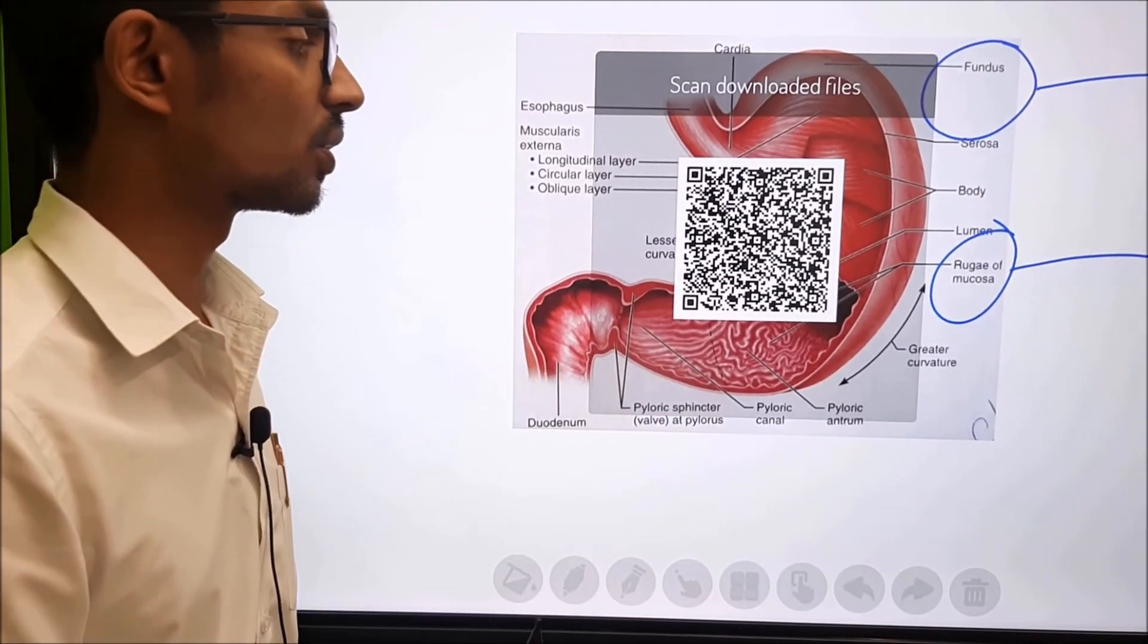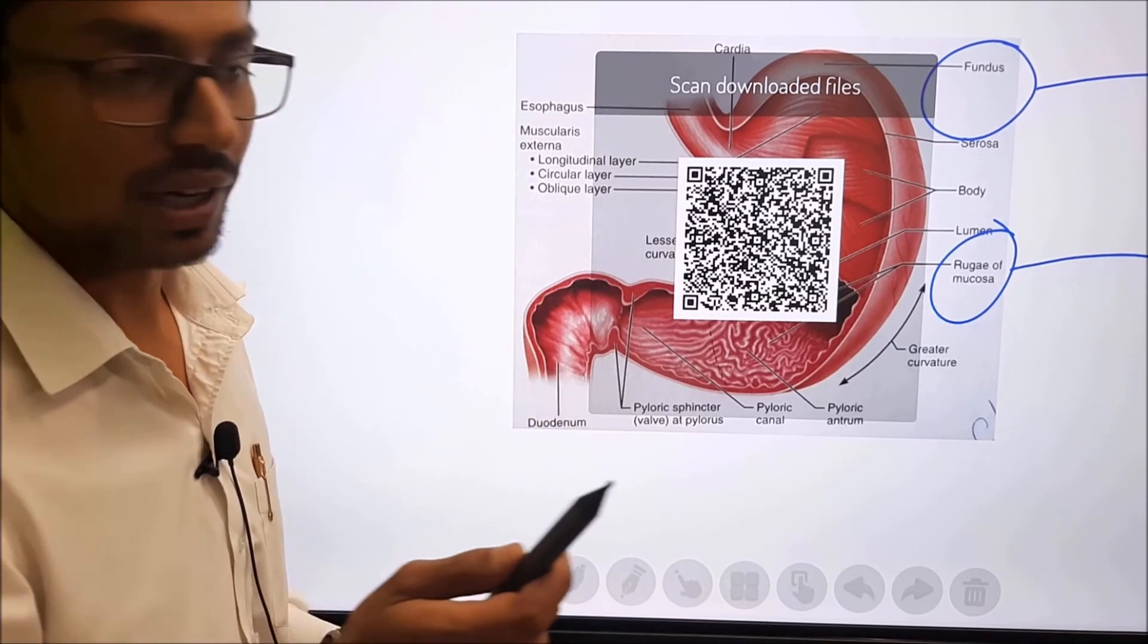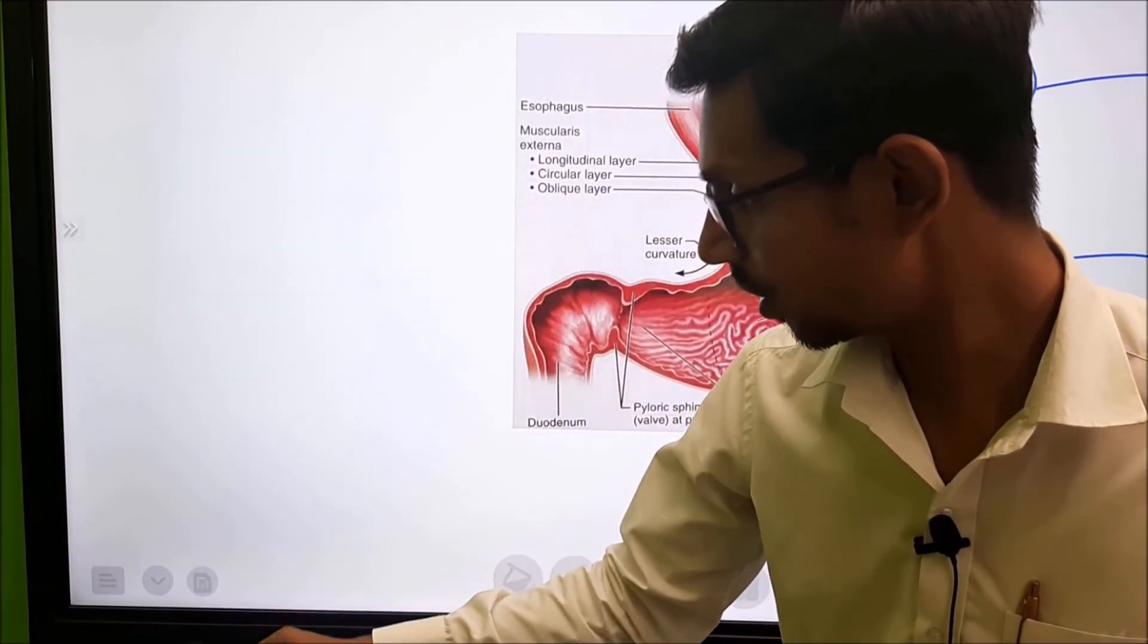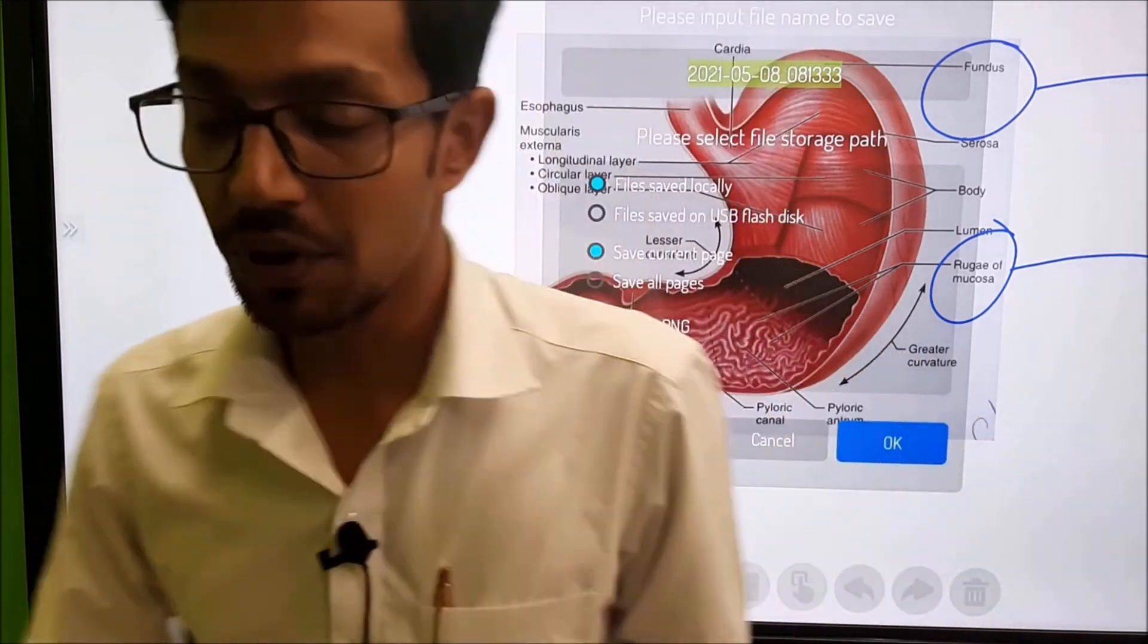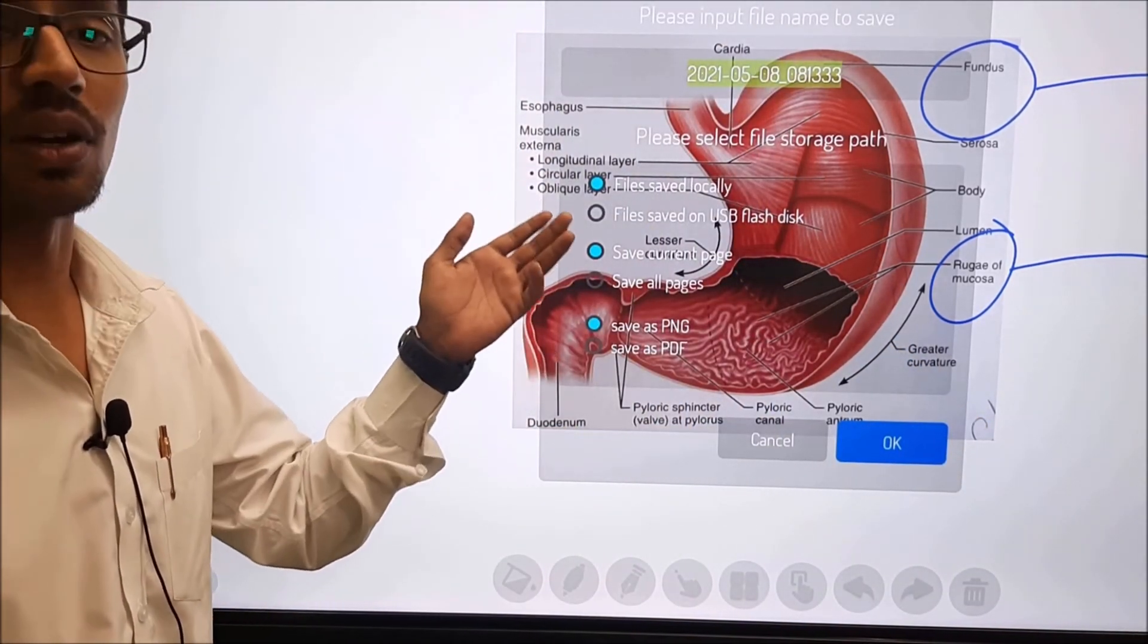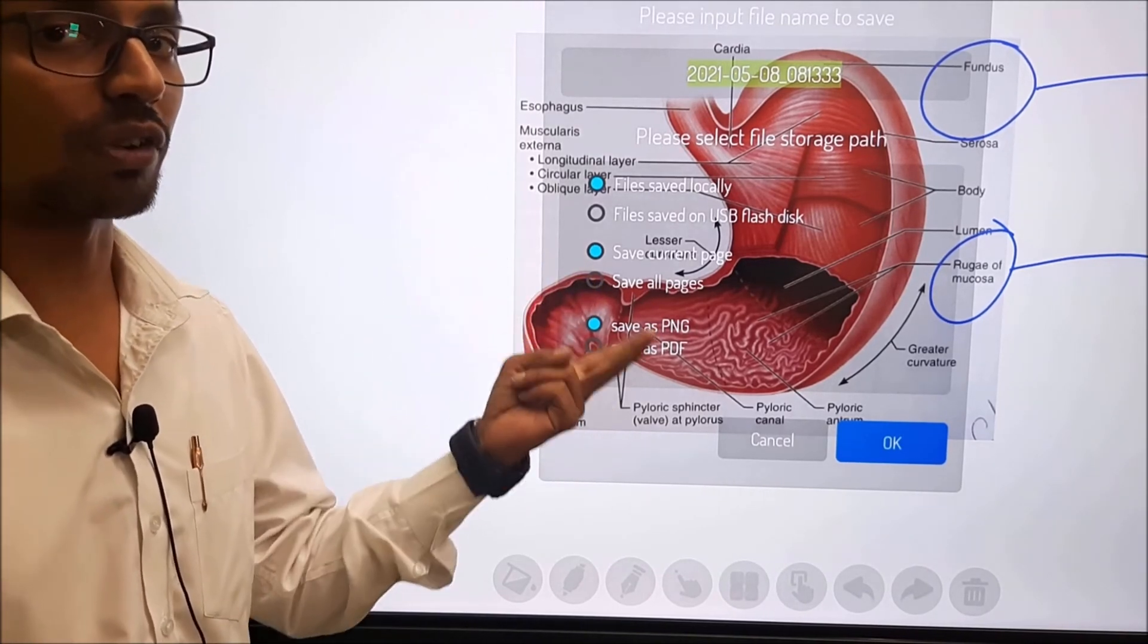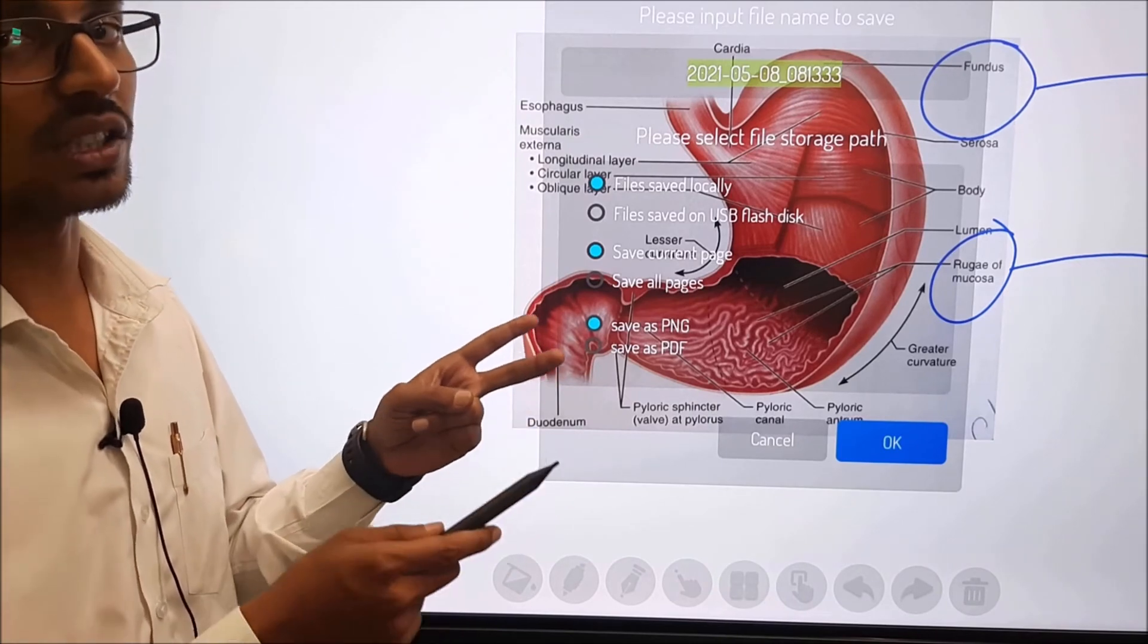This way I'll be able to share all the pages or a single page. Now I want to save my content. You can see there is the save option over here. Clicking on which will bring out this dialogue box where I have three options to save locally or on the USB which I've attached, all the current page or all the pages, and two different formats: one is PNG, that is your image file, or the other one is the PDF file.